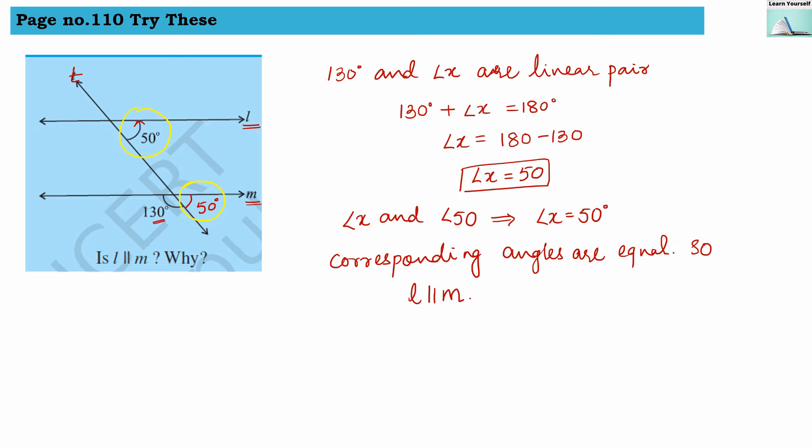In earlier examples, they gave us that l is parallel to m, and then we had to find that corresponding angles are equal. But here they have already given us this condition, and we are proving that line l is parallel to m. So in either case, if one thing has been given, we can prove the other. If lines are parallel, we can prove that corresponding angles are equal. Or if corresponding angles are equal, we can say that lines are parallel.